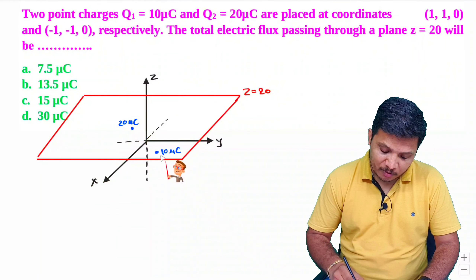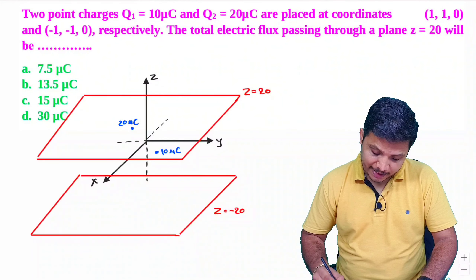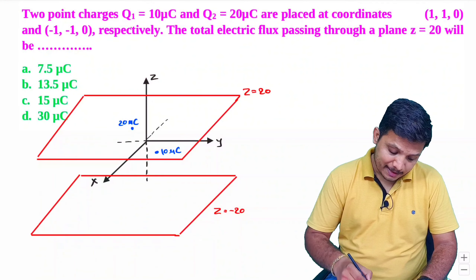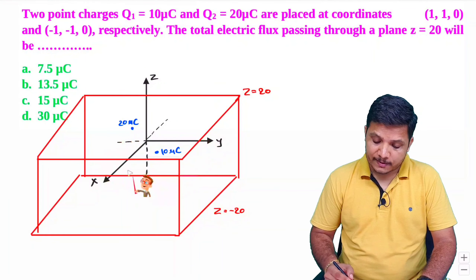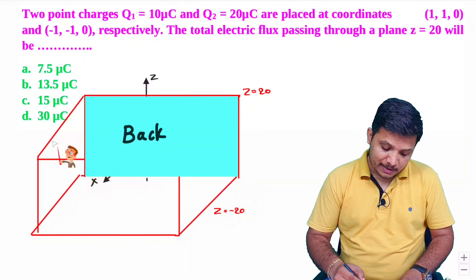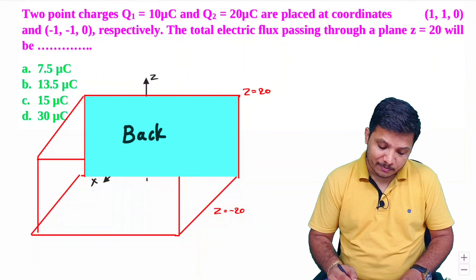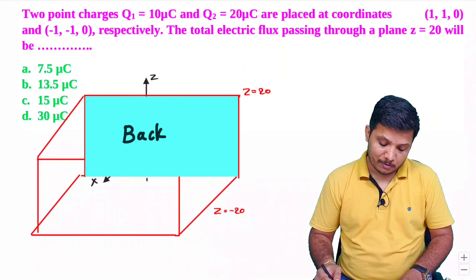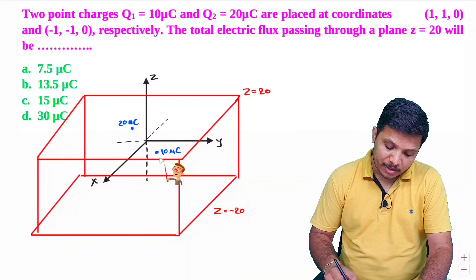I draw the symmetric plane at Z equals minus 20 and add sides to make this a closed surface. This enclosed surface has a front surface, a back surface, a left-hand side surface, and a right-hand side surface — all at infinite distance from the two charges. Since these surfaces are at infinite distance, the electric field passing through them will be zero. Therefore, total flux through all six surfaces equals the charge enclosed inside, which is 20 micro coulomb plus 10 micro coulomb, giving 30 micro coulomb.